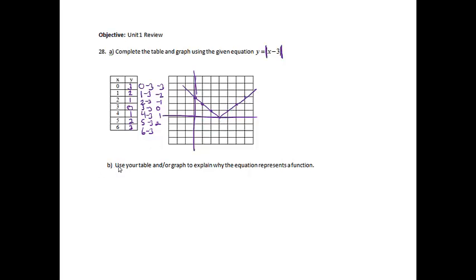Right, and then B, it says to use your table and/or graph to explain why the equation represents a function. If I use the table, I would say that every input has exactly one output.